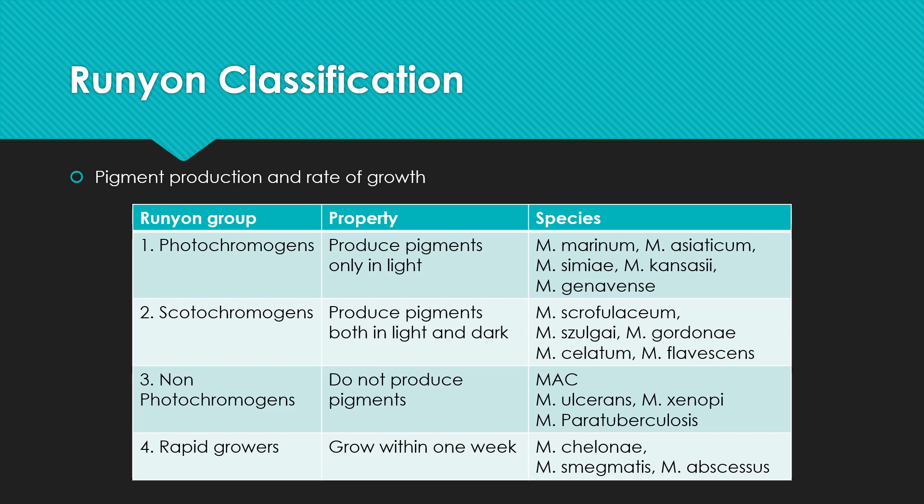The important members of the photochromogen group are M. marinum and M. kansasii. The second group is scotochromogen, which means it produces pigments both in light as well as in the dark. The most important member of this group is M. scrofulaceum. The third group is non-photochromogen, meaning it does not produce pigments. The important members are M. avium intracellulare complex (MAC) and M. ulcerans.